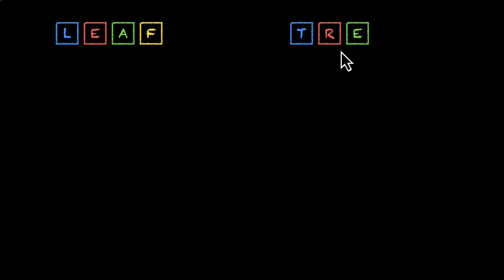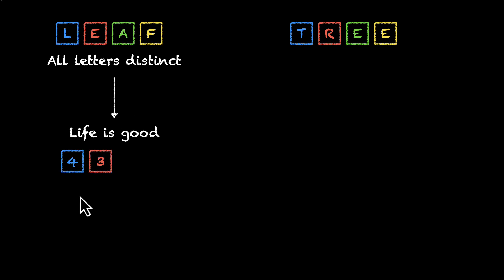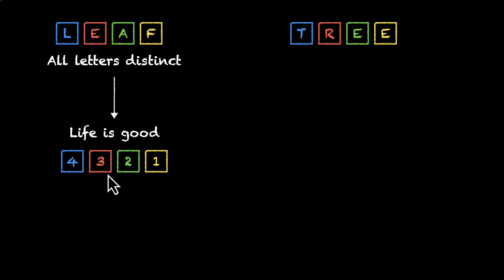In the previous video, we looked at leaves and trees. We compared a scenario where all four letters are different to a scenario where some letters actually repeat. In the case where the letters are different, which means life is good, we can calculate the total number of ways to rearrange by multiplying 4 × 3 × 2 × 1, which gives us 24 ways.